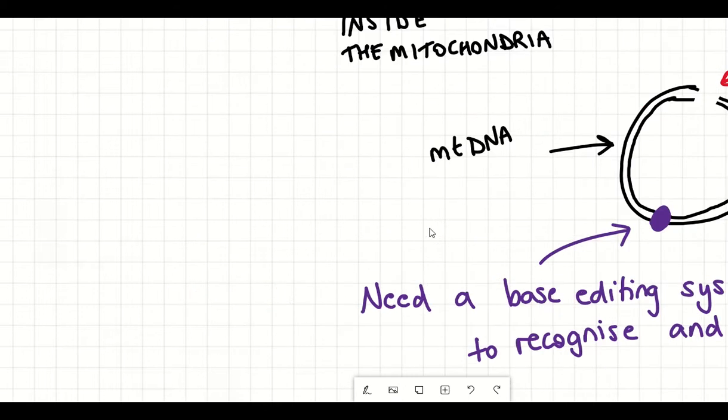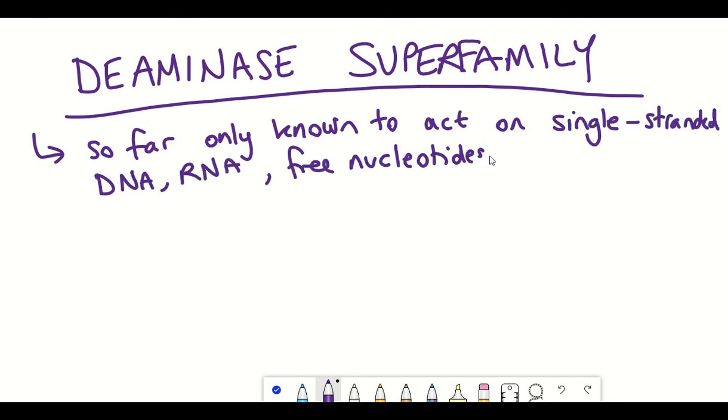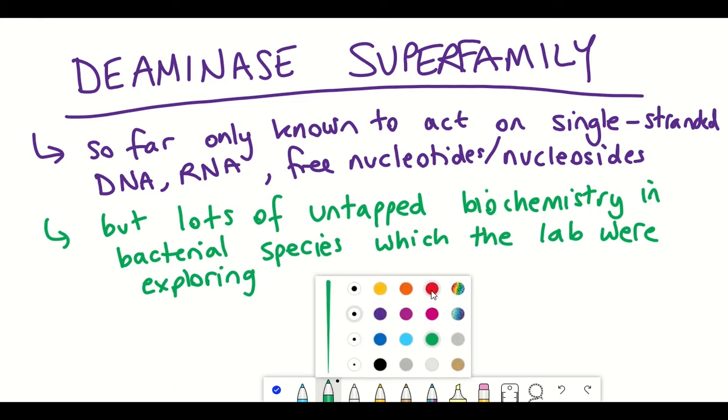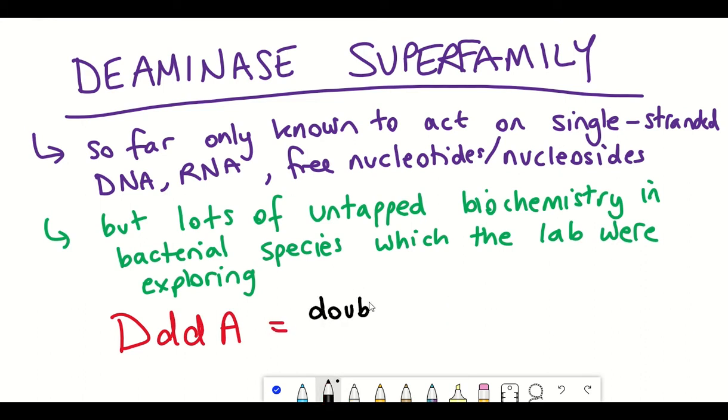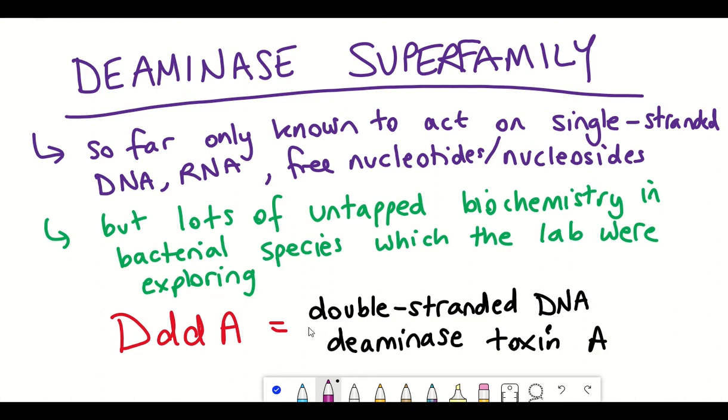David Liu's group were exploring different deaminases, the entire superfamily of deaminases, and they were exploring their biochemical activity. And they came across one deaminase that actually converted cytosine to uracil within double-stranded DNA, which was super exciting. And they made the cool connection with this ability and the chance of potentially now editing mitochondrial DNA. And the name of this enzyme was coined double-stranded DNA deaminase toxin A, or DddA for short.